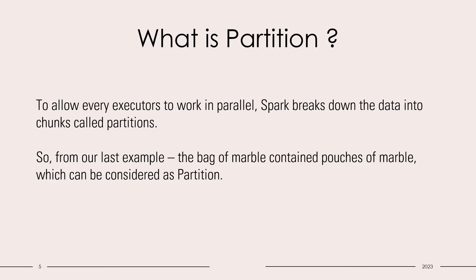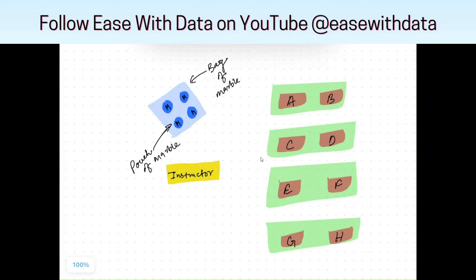To start with, let's understand what is partition. To allow executors to work in parallel, Spark breaks down the data — which we call the input data — into chunks, which is known as a partition. If you remember our last example, we had a bag of marbles and the marbles were segregated into pouches. You can consider those pouches as partitions. So our data was partitioned into four partitions, which can be executed by four tasks in parallel. This allows Spark's parallel processing capability.